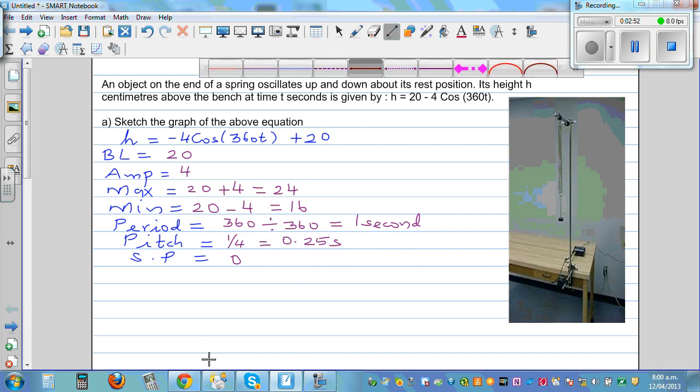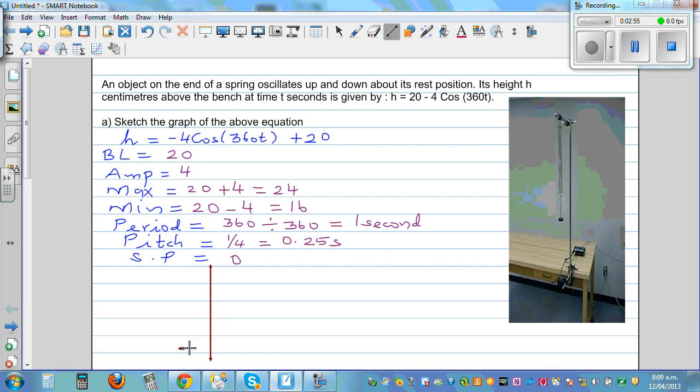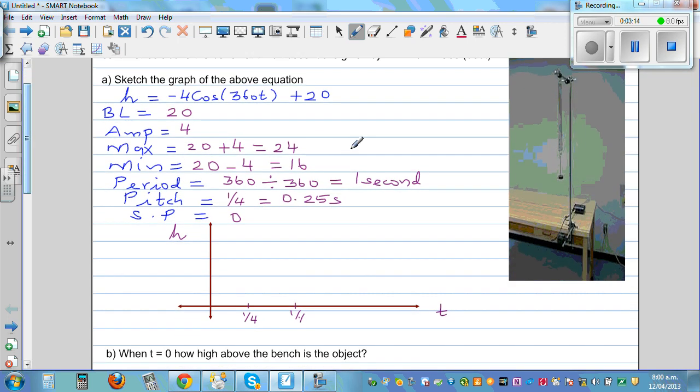So you know these facts. So let us sketch it. This is your y axis, this is your x axis. On y axis you are taking height h, and on x axis you are taking time. So you know it is 1 second. So this is 1 quarter of a second, then you got a half a second, then you got 3 quarters of a second, and then you got 1 second. Within 360 you are going to get 360 oscillations. That means 1 oscillation takes 1 second.